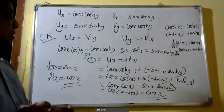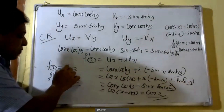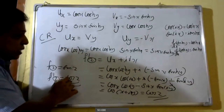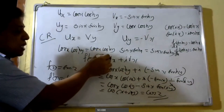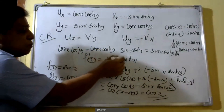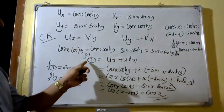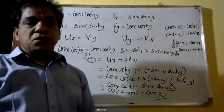Therefore the derivative of f(z) = sin(z) is f'(z) = cos(z). We have proved this result by using the formula f'(z) = u_x + i·v_x, showing that f'(z) = cos(z).